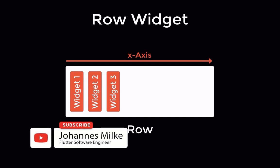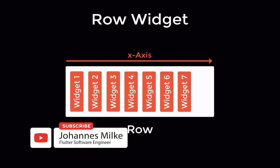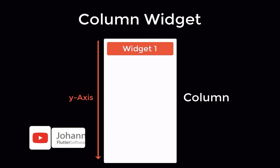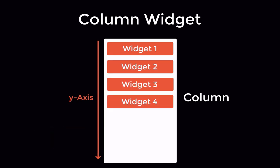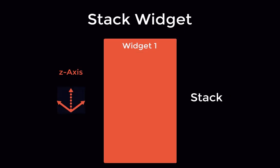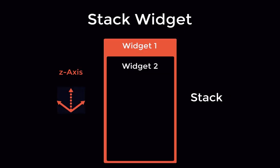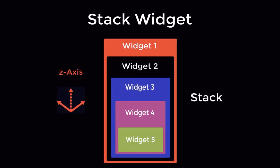Use the row widget to display multiple widgets horizontally on the x-axis, use the column widget to display multiple widgets vertically on the y-axis, and use the stack widget to display multiple widgets on top of each other on the z-axis.